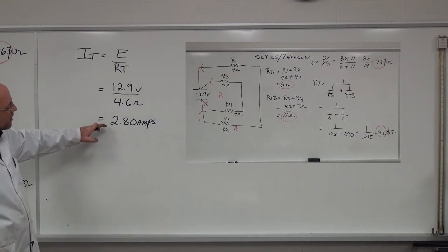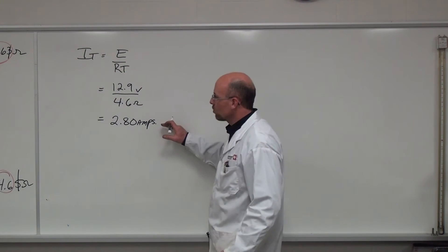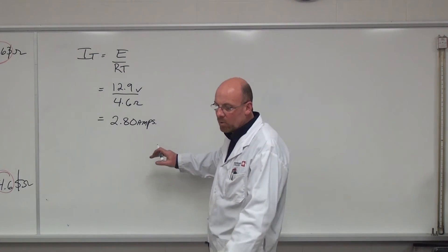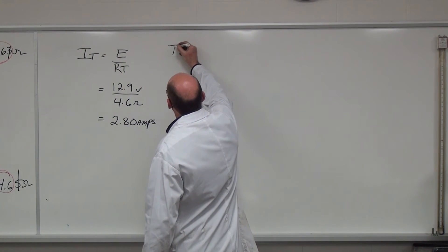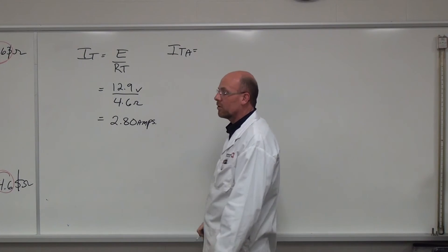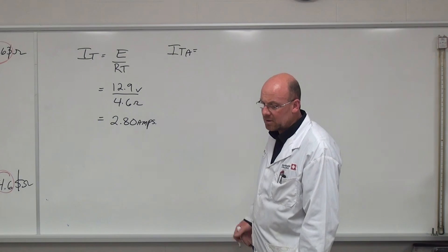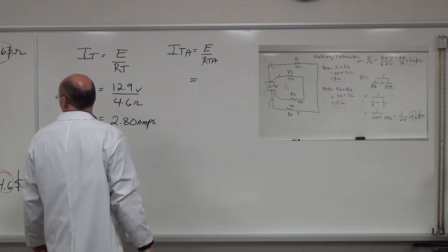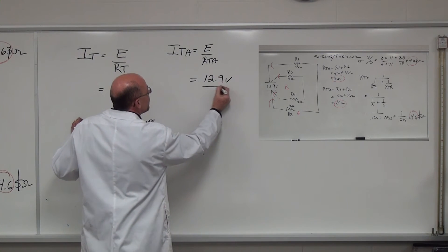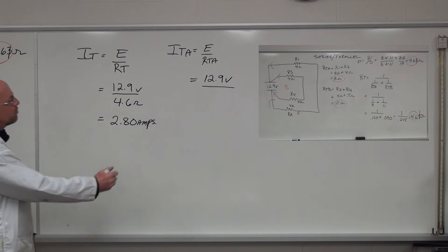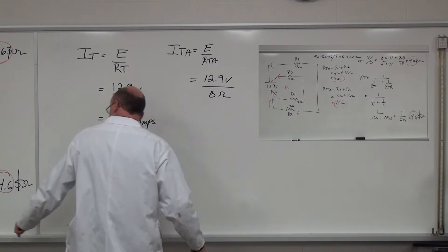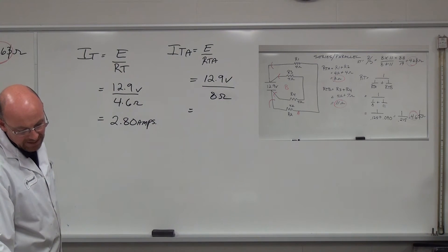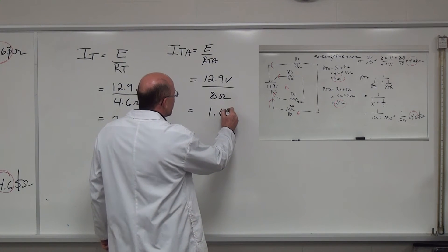Now what we have to look at is where this is actually flowing. And it's obviously going to flow at a different rate in each path because we have two different resistance values between the RTA path and the RTB path. So now we're going to take a look at each individual path. So if I say ITA, that's what we're looking for - the amount of current flowing in path A. So we take a look at this and we calculate it as E over RTA. We use 12.9 volts divided by the resistance total of A, which is 8 ohms, and we take 12.9 and divide it by 8, gives us 1.61 amps.